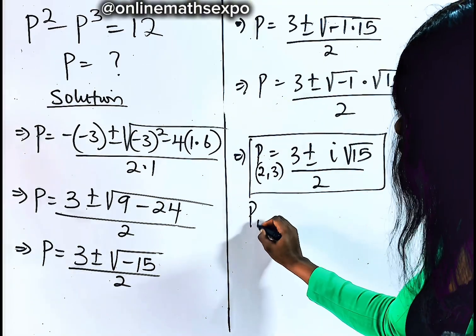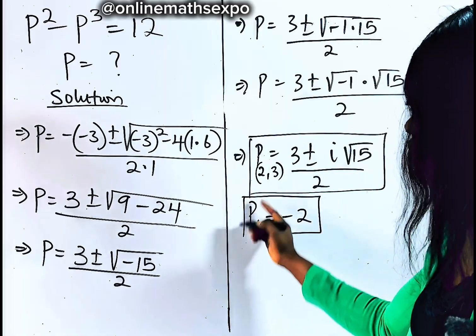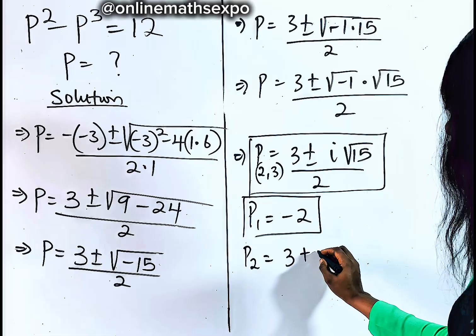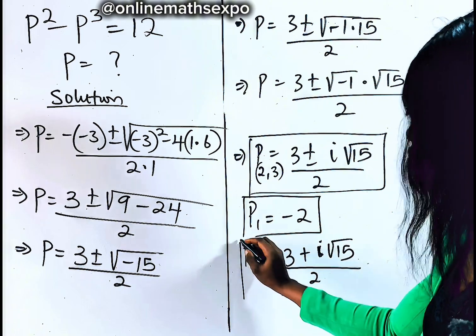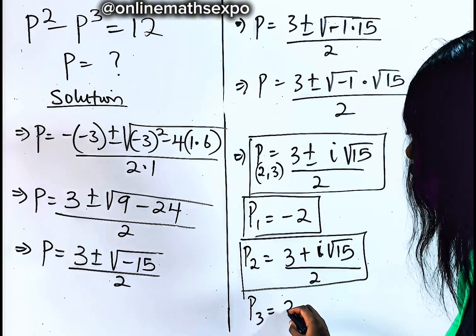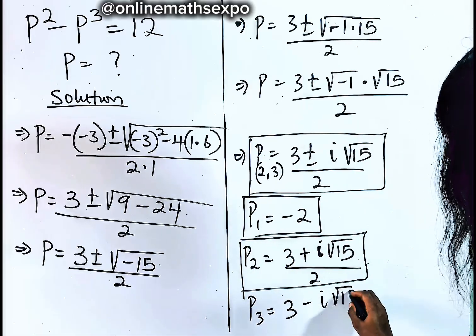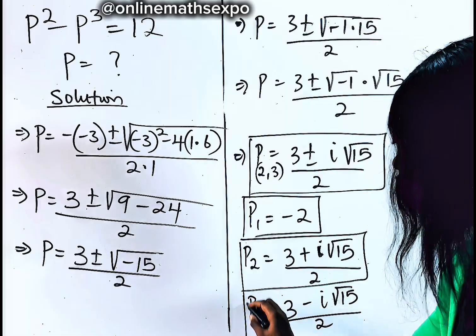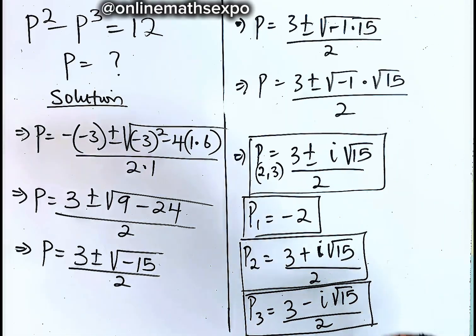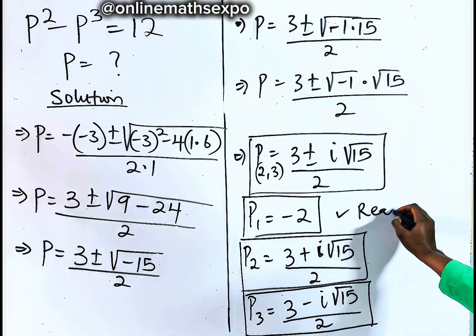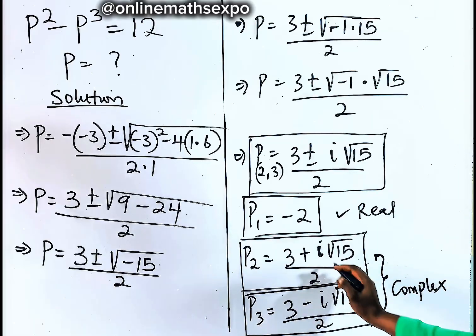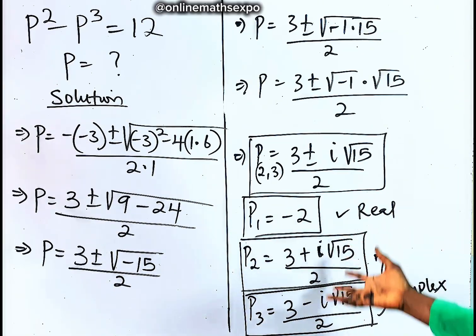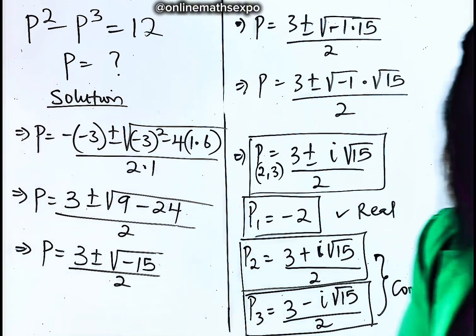This gives us all three values of P. The first value is P equals negative two — this is the real solution, found on a number line. The second value is P equals three plus i root 15 divided by two, and the third value is P equals three minus i root 15 divided by two. These two are complex solutions containing both real and imaginary parts, which corresponds to what we stated at the beginning of the tutorial.